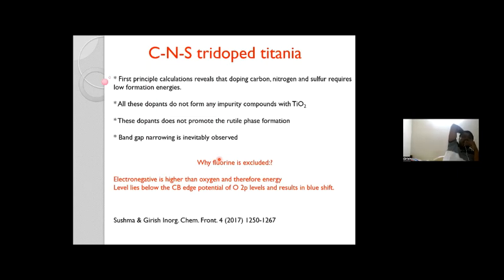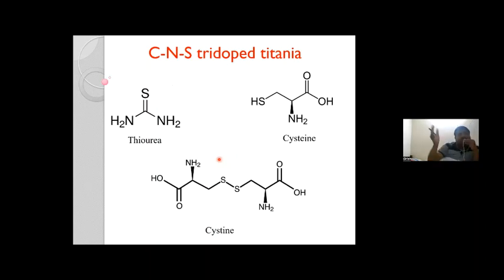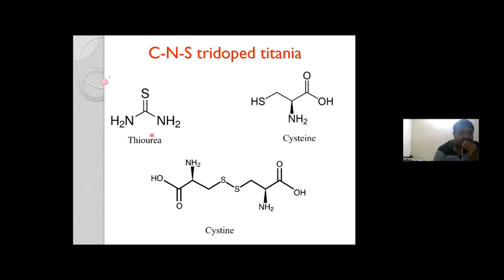We have excluded fluorine because its energy level is below the oxygen 2p levels, causing a blue shift — i.e., band gap widening. The basic precursors widely used are thiourea, cysteine, and cystine. Note that cysteine (E-I-N-E) and cystine differ significantly in molecular structure: in thiourea, carbon and sulfur are doubly bonded; in cystine, a sulfur-sulfur bond is present. Because of these structural differences, the doping modes of carbon, nitrogen, and sulfur are also affected.